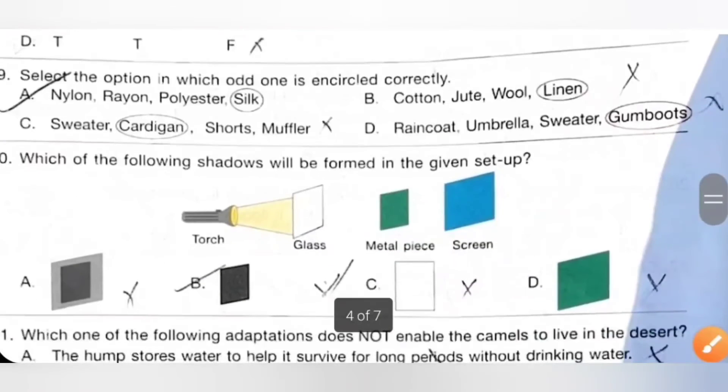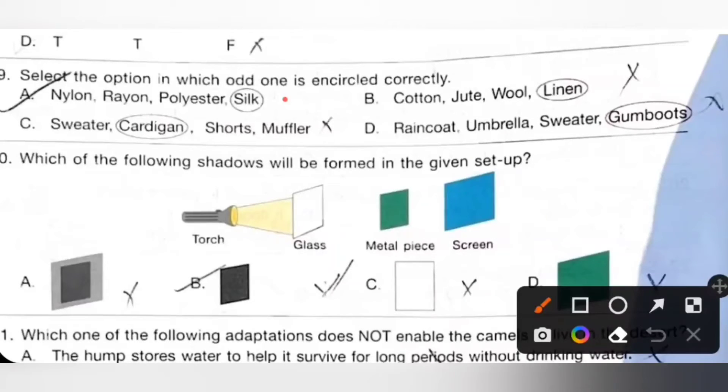Nineteenth: Select the option in which odd one is encircled correctly. Option A: Nylon, rayon, polyester, silk. So odd one is encircled correctly. Nylon, rayon, polyester are man-made fiber while silk is a natural animal fiber. So option A is the correct answer.